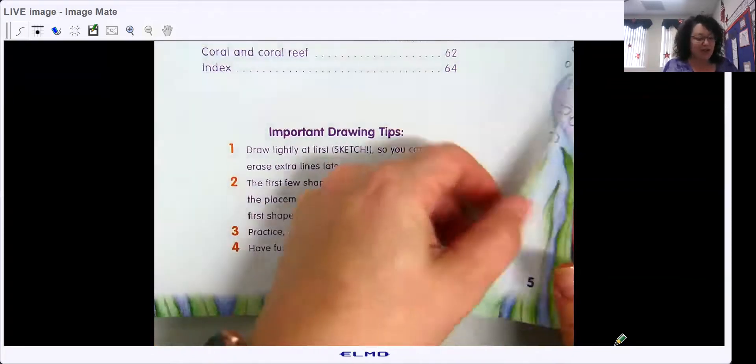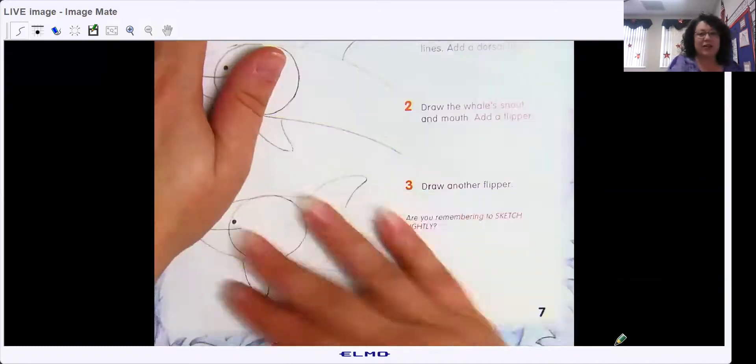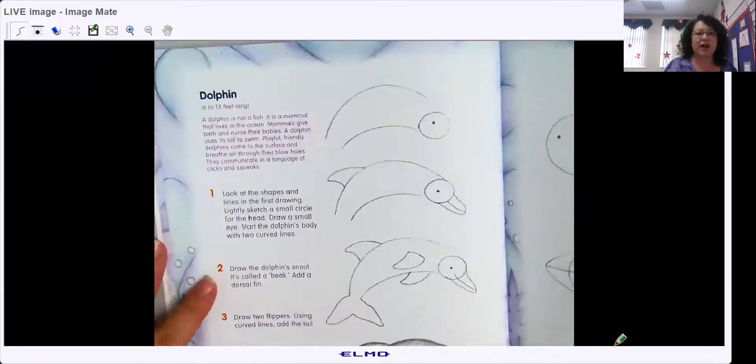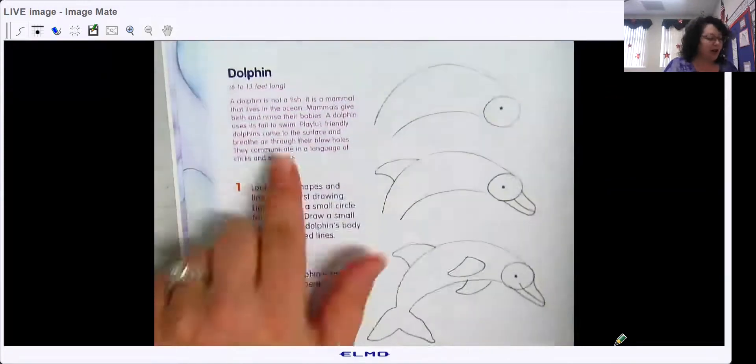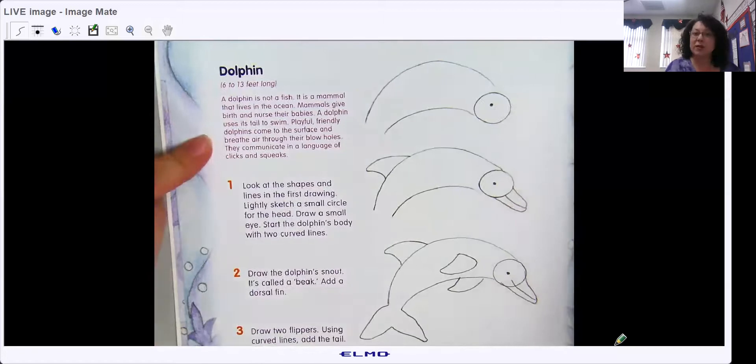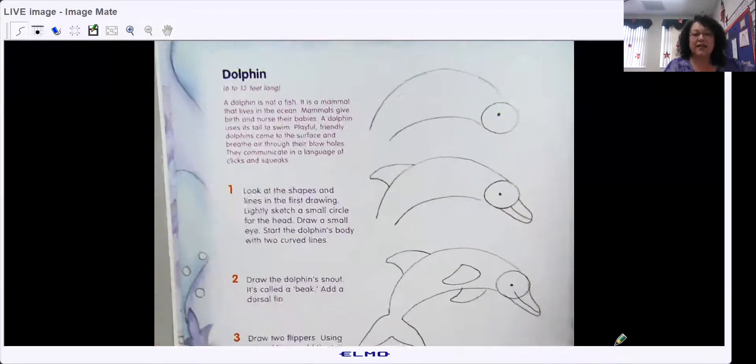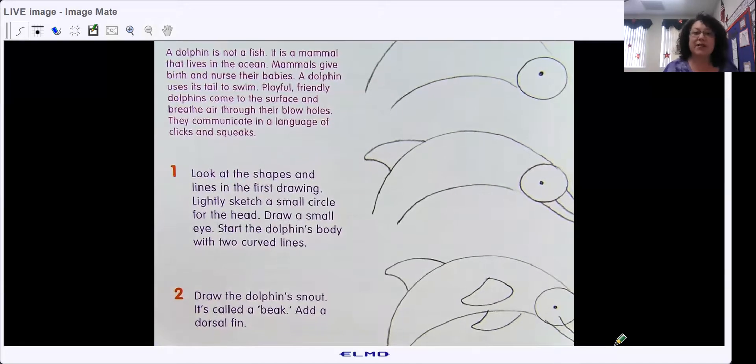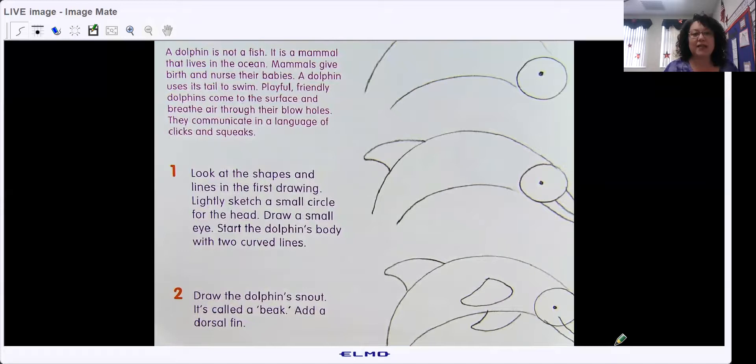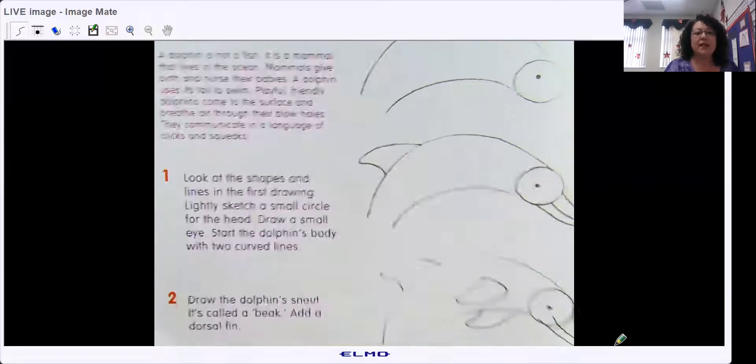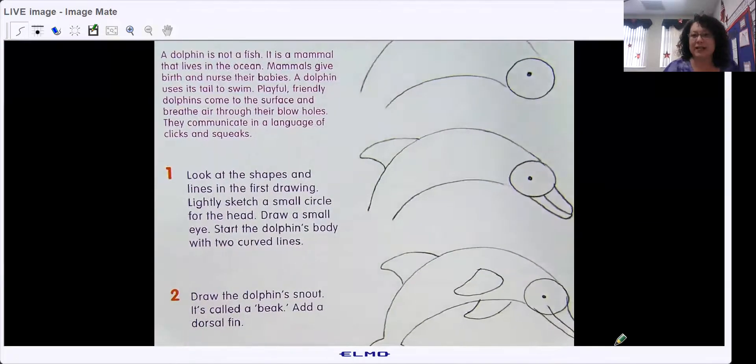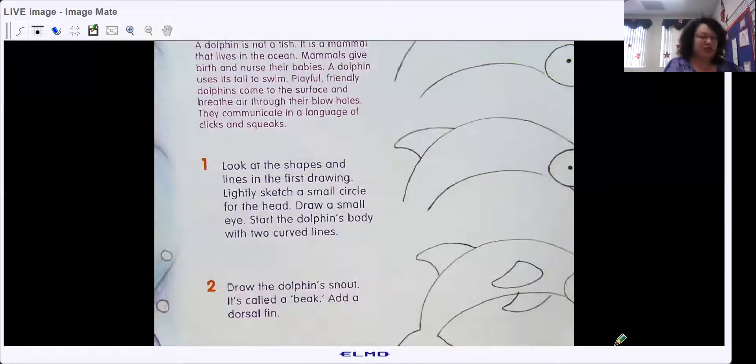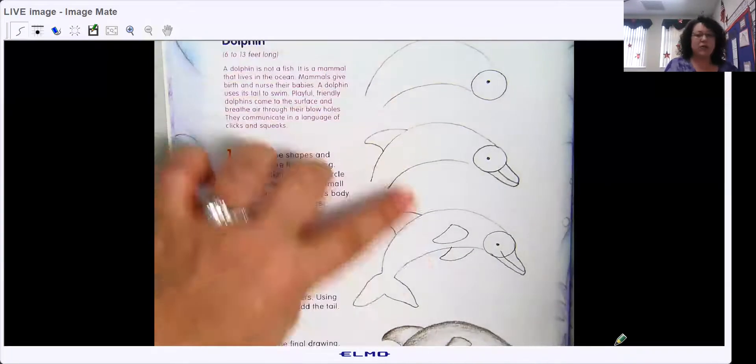So today our functional text is we are actually going to draw. Today is drawing day in writing. And we are going to draw a dolphin which is pretty cool being that we live here in Florida. Dolphins are 6 to 13 feet long. So it gives us a little bit of text about a dolphin. A dolphin is not a fish. It is a mammal that lives in the ocean. Mammals give birth and nurse their babies. A dolphin uses its tail to swim. Playful friendly dolphins come to the surface and breathe air through their blow holes. They communicate in a language of clicks and squeaks.